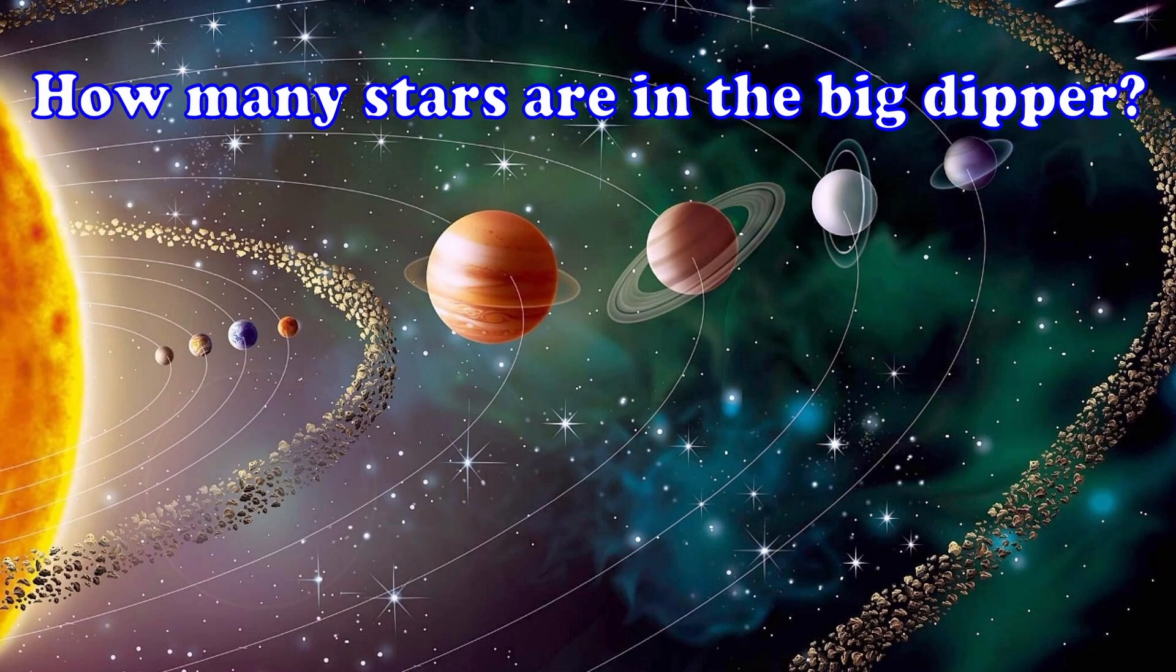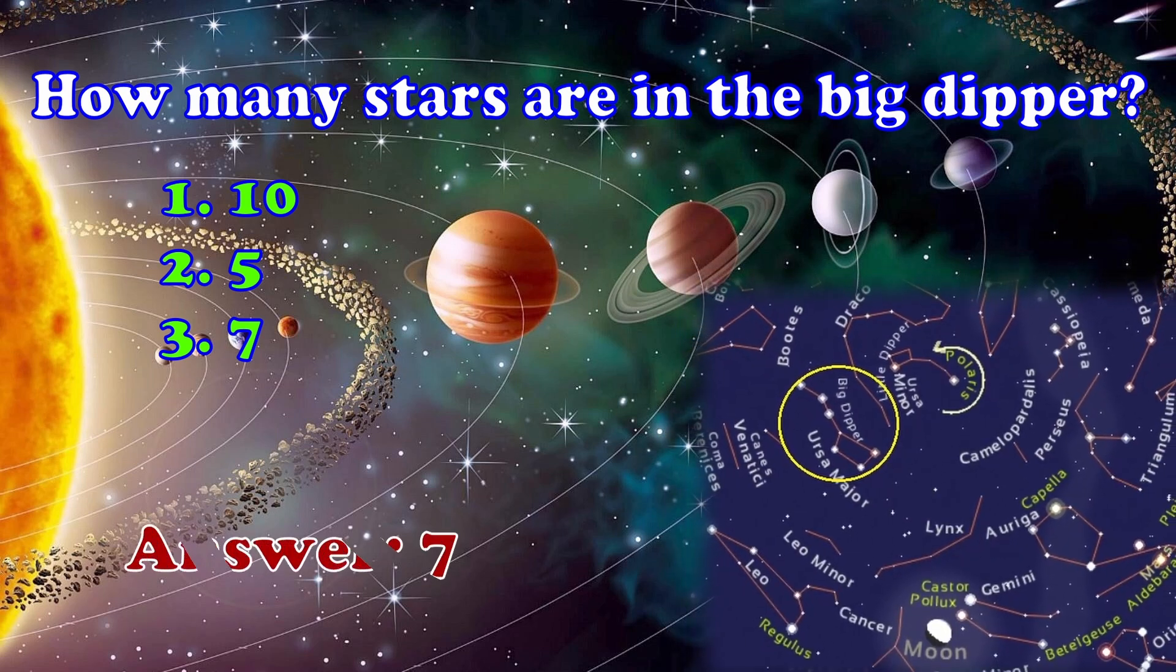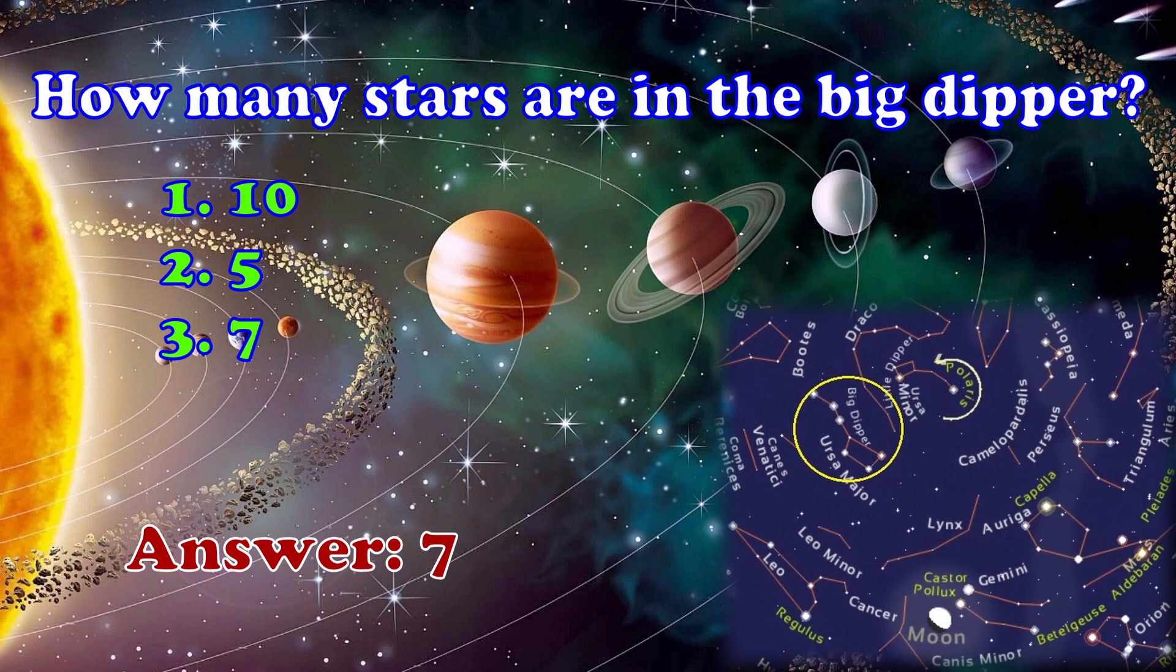How many stars are in the Big Dipper? 1, 10, 2, 5, 3, 7. The answer is 7.